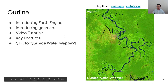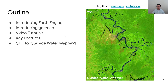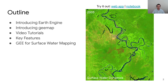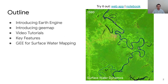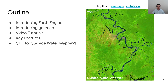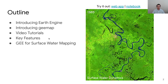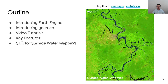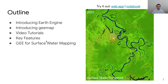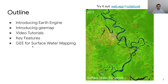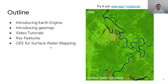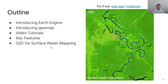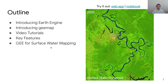Here is the outline of my presentation. First, I will briefly talk about Google Earth Engine, and then I will introduce the geemap Python package. After that, I will show you some video tutorials and key features of the package. At the end, I will demonstrate how you can use Google Earth Engine for mapping surface water in Tennessee.